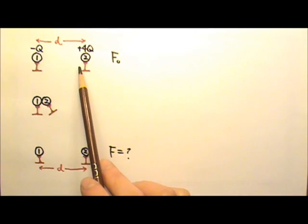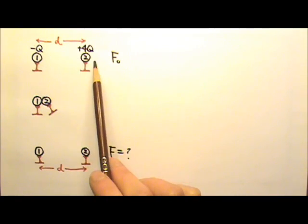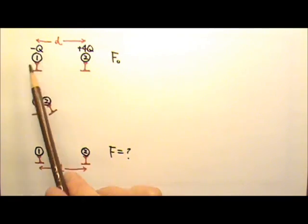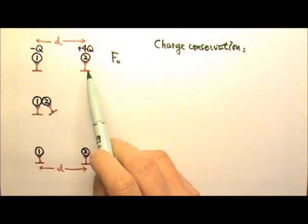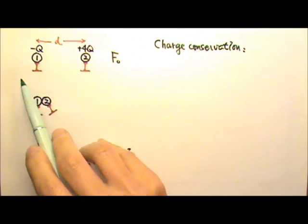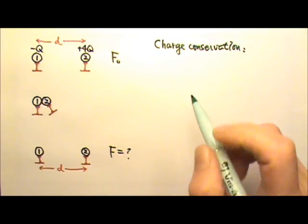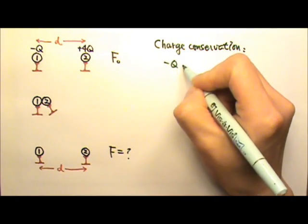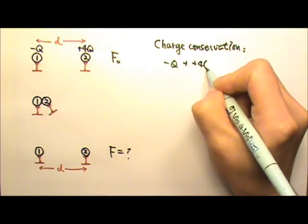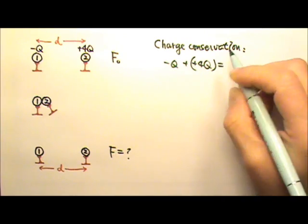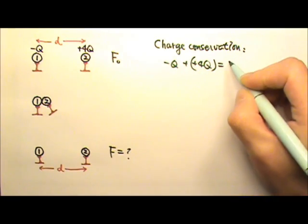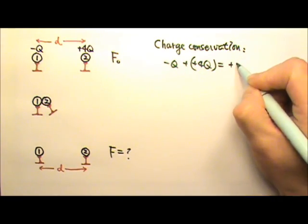When the two spheres touch, part of the positive charges cancel with the negative charges. Because the charges are conserved, the net charge on the two spheres combined should stay the same. So negative q plus positive 4q, the total charge after they touch should still be the same positive 3q.